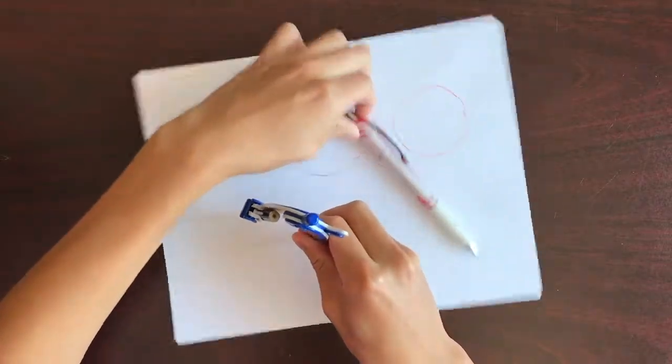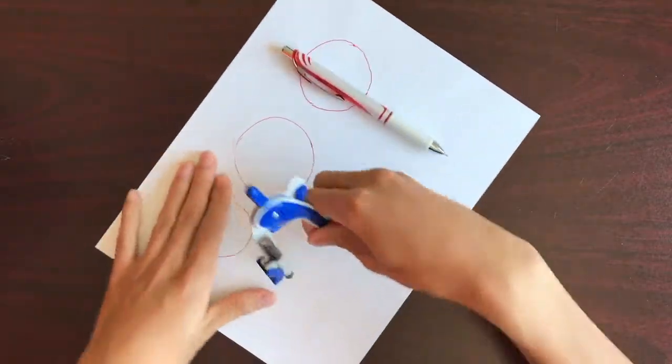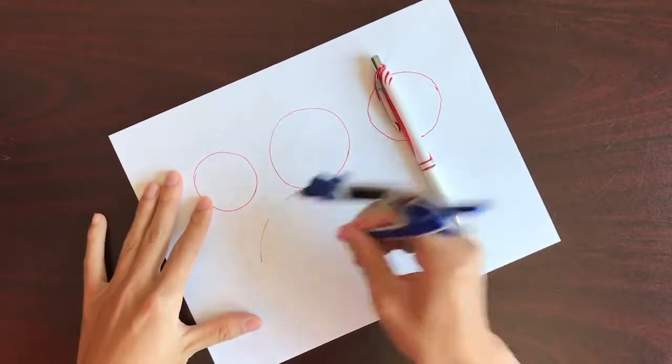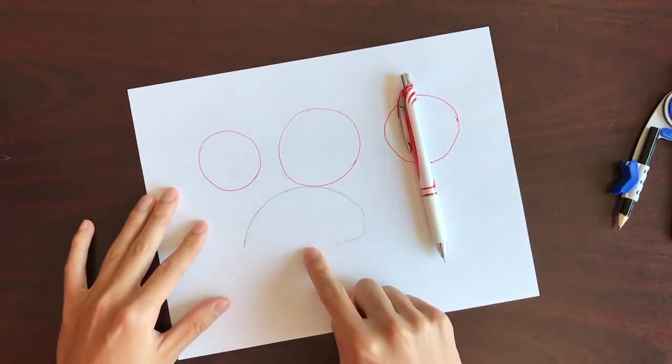Compasses aren't very convenient to carry around. They can be expensive and hard to buy. They're also hard to use and they leave a hole in the paper.